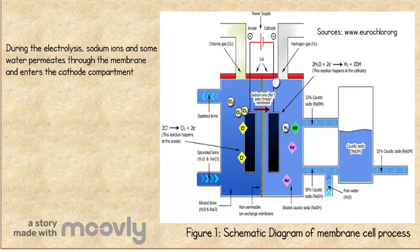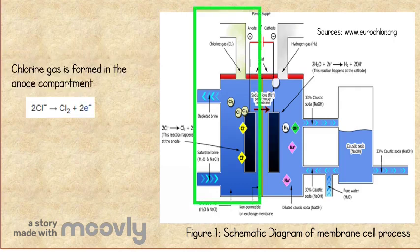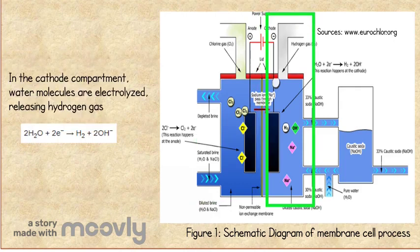During the membrane cell electrolysis, sodium ions and some water permeate through the membrane and enter the cathode compartment. Chlorine gas is formed in the anode compartment. In the cathode compartment, water molecules are electrolyzed, releasing hydrogen gas.